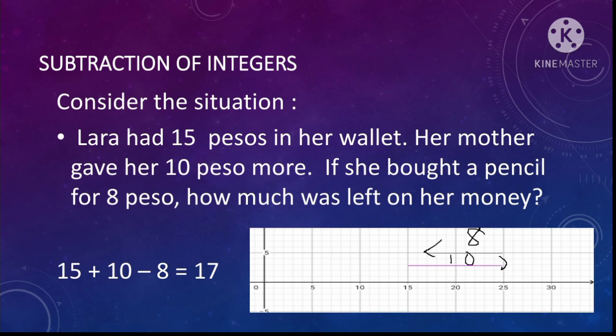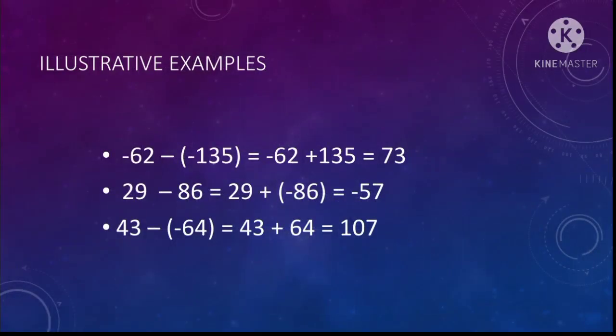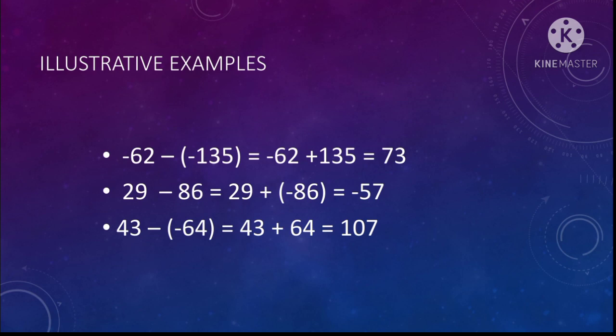The remaining money that she had is a total of 17 pesos. Another example: negative 62 minus negative 135. Negative multiplied by negative is equal to positive, so we have negative 62 plus 135, which is equal to 73.